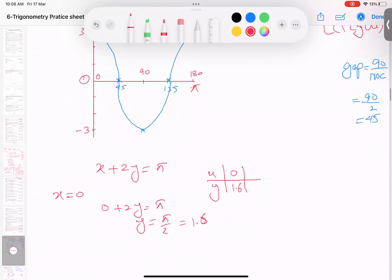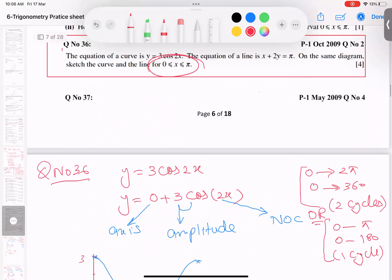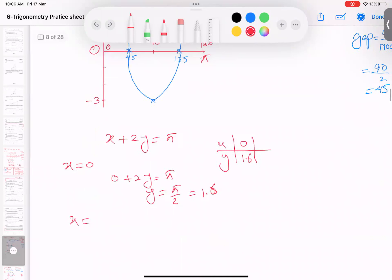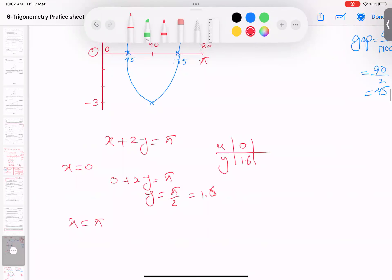When I plug in another value, what is another value? From 0 to π, you can plug in any. I think π is a good option. You can plug in π. So when π goes here, π plus 2y equal to π. π π cancel. Y becomes 0.